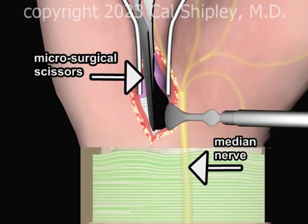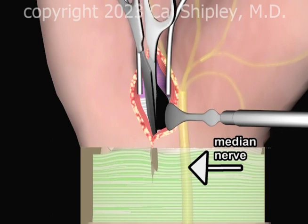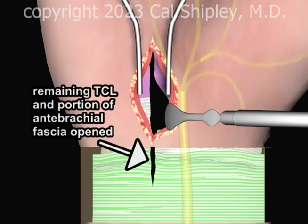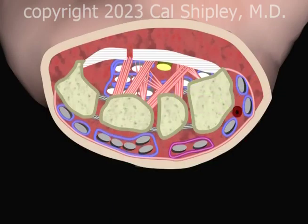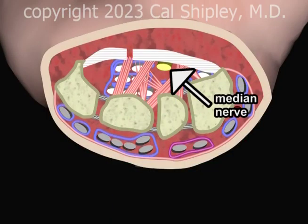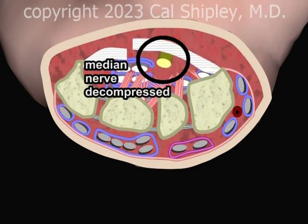Microsurgical scissors are again employed to open up the remainder of the TCL and the distal portion of the anti-brachial fascia. The distal flexor retinaculum, the transverse carpal ligament, and a portion of the anti-brachial fascia have now been opened. As a result, pressure within the carpal tunnel has been reduced and there is significant decompression of the median nerve.